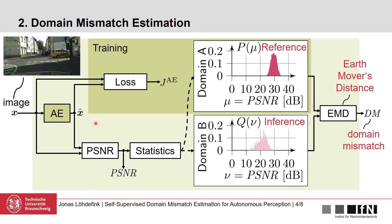Let's have a closer look at our domain mismatch estimation. Here we have our autoencoder, which is trained with a variety of loss functions and evaluated with the PSNR. We can compute the histogram of PSNRs in the training as well as in the inference. Afterwards, we compare these two distributions via the Earthmovers distance, which is also called Wasserstein 1 distance, to obtain our domain mismatch metric.